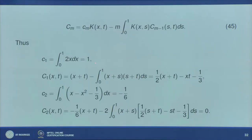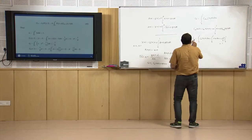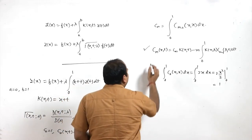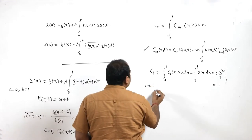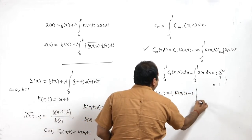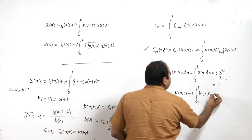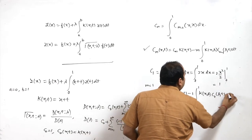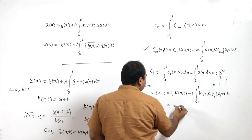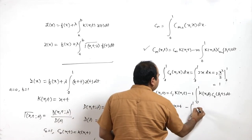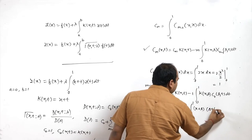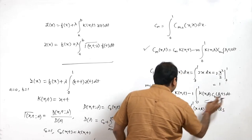Once we have c₁, we use the recurrence relation to find capital C₁(x,t). For m=1: C₁(x,t) = c₁·k(x,t) − 1·∫₀¹k(x,s)C₀(s,t)dt = 1·(x+t) − ∫₀¹(x+s)(s+t)ds. Expanding the integrand gives x·s + x·t + s² + s·t, integrated over 0 to 1 with a minus sign outside.